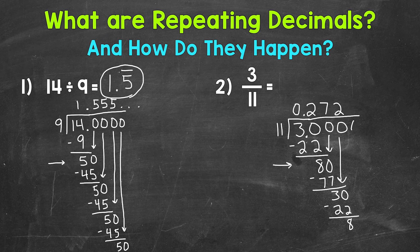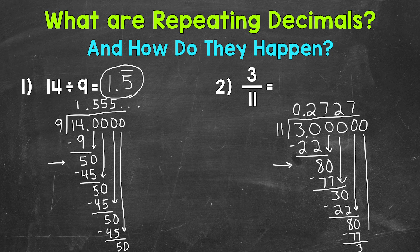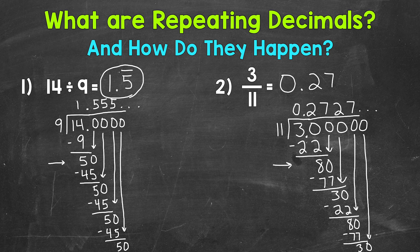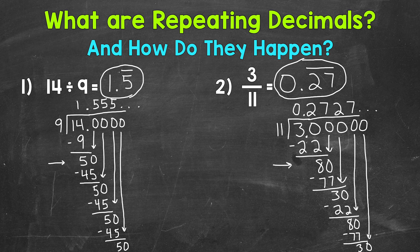You may start to notice a pattern here. 80 divided by 11 is 7, that gets us to 77, subtract, we get 3 again. We can extend with another zero, and that pattern is going to continue on forever. So we get 0.27 repeating. We can express this by writing 0. and the digits that repeat — 2 and 7. So we put a bar above the 2 and the 7. If we have a group of digits that are repeating, make sure you put the bar above that group. So 0.27 repeating.